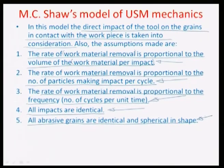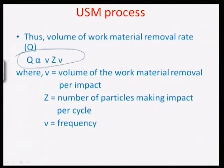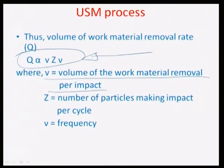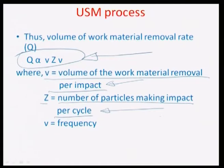For a predictive estimation of the MRR in a USM process, this comes out to be of the form Q ∝ V · Z · ν, where V is the volume of work material removed per impact, Z is the number of particles making impact per cycle, ν is the operational frequency of the vibrating tool head, and Q is the volume rate of work material removal.